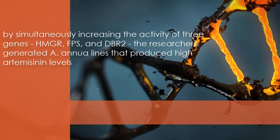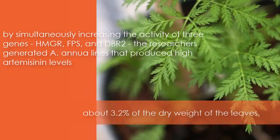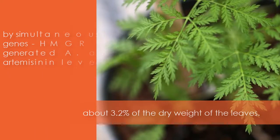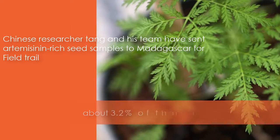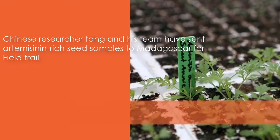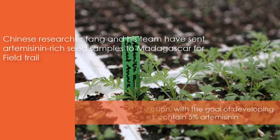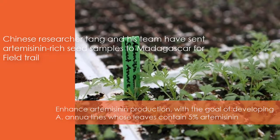By simultaneously increasing the activity of three genes — HMGR, FPS, and DBR2 — researchers generated A. annua lines that produced high artemisinin levels of about 3.2% of the dry weight of the leaves. Leveraging these findings, Tang and his team sent artemisinin-enriched seed samples to Madagascar, the African country that grows the most A. annua, for a field trial. They are also continuing to explore ways to enhance artemisinin production, with the goal of developing A. annua lines whose leaves contain about 5% artemisinin.